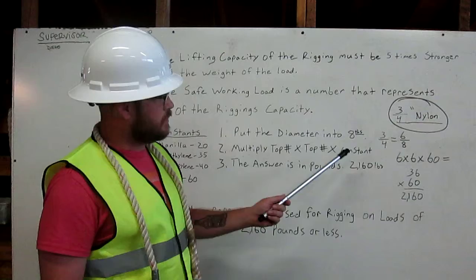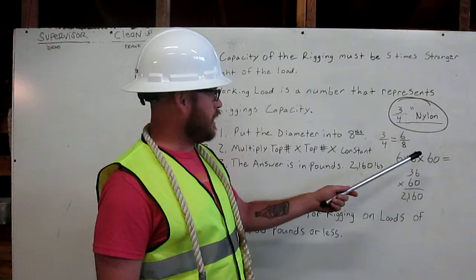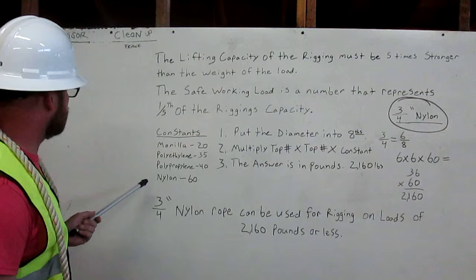Two, multiply top number times top number times constant. The top number of six-eighths is six. So we have six times six times sixty. We've got the constant and the constants of the rope.